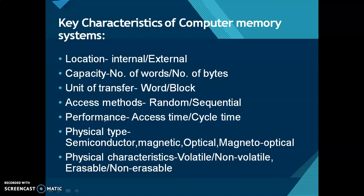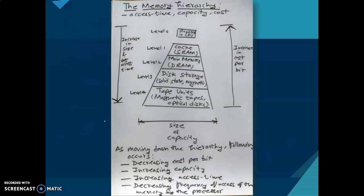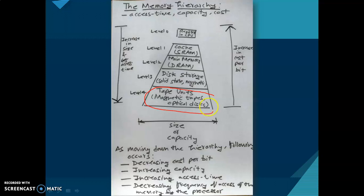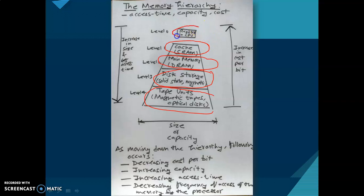These are the key characteristics of computer memory systems. Next is the memory hierarchy. Memory hierarchy is described by three key characteristics: access time, capacity, and cost. At the bottom of the hierarchy are tape units or magnetic tapes and optical disks, which have larger capacity. The next level is disk storage — solid state and magnetic. Above that is main memory made of DRAM (dynamic RAM), and cache memory made of static RAM. At the top are registers inside the CPU.